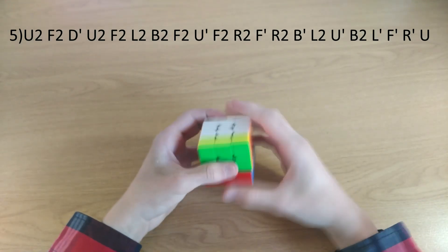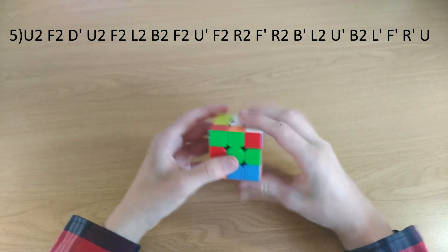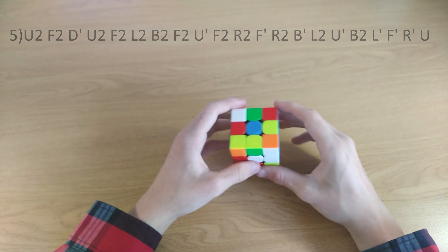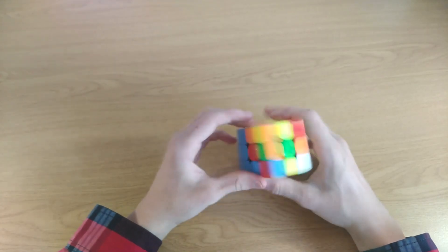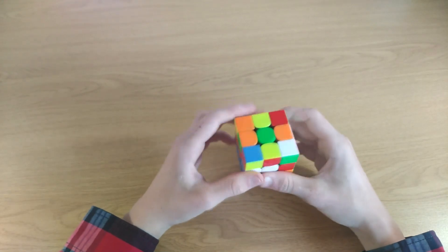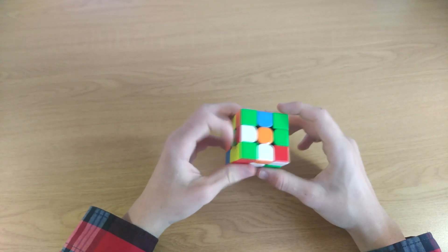And here's the scramble again. Okay, this is the last scramble. Let's go through it. First of all, here I would have probably done, let's see, an L' to start off. L' so we can insert this red piece here, which we will do later on.